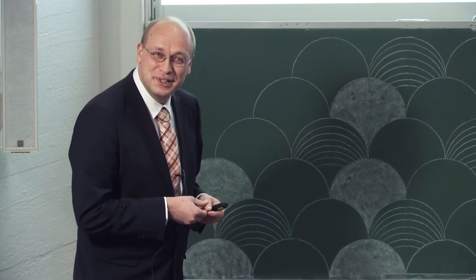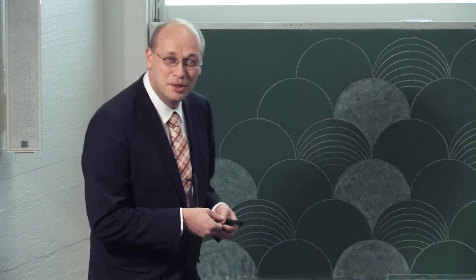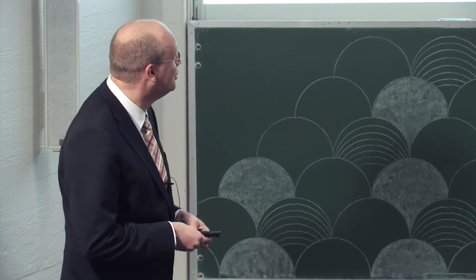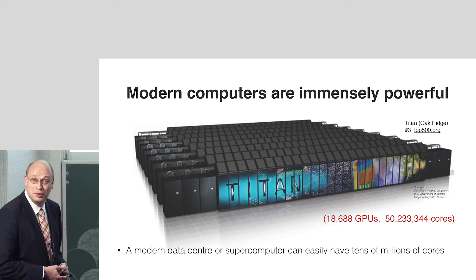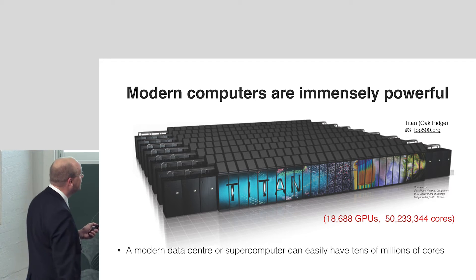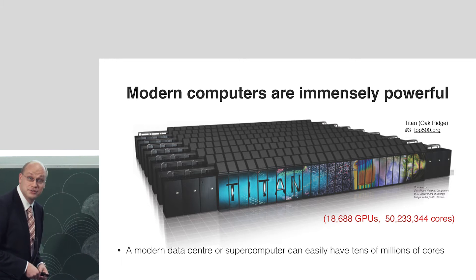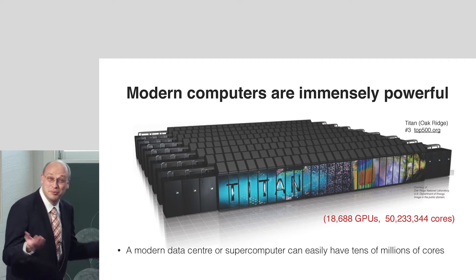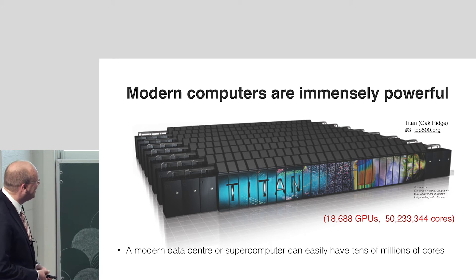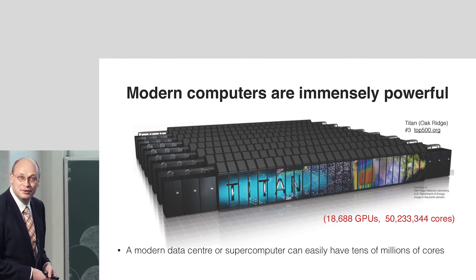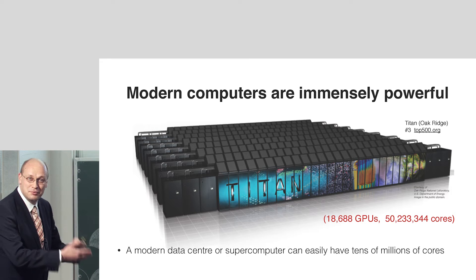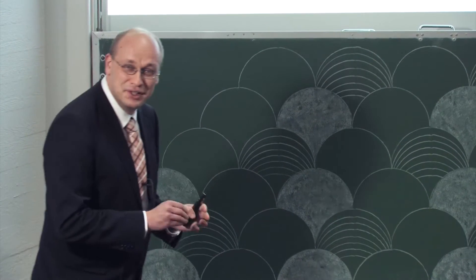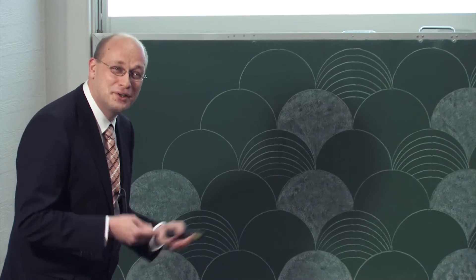Now let's scale up a little bit and really start marveling actually how powerful devices we have at our use in terms of conducting science. So here is, for example, one of the more powerful supercomputers on the planet. This is the Titan supercomputer at Oak Ridge. It's the number three computer on the planet.